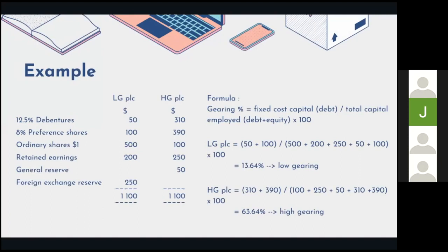Now I'll be explaining the example. Here is the example of LG PLC and HG PLC. Based on the given information and using the formula, LG PLC's gearing percentage is 13.64%, which is low gearing, while HG PLC is high gearing at 63.64%.